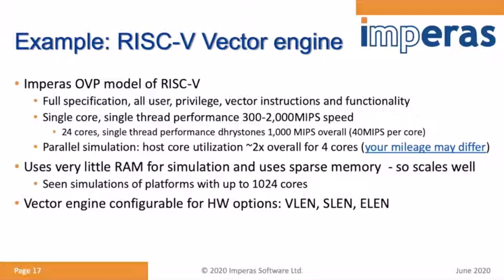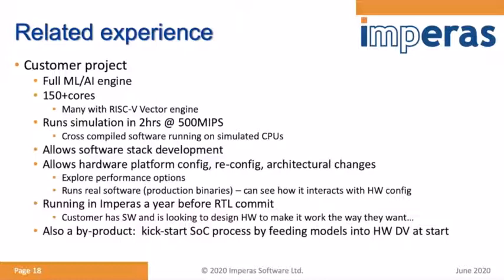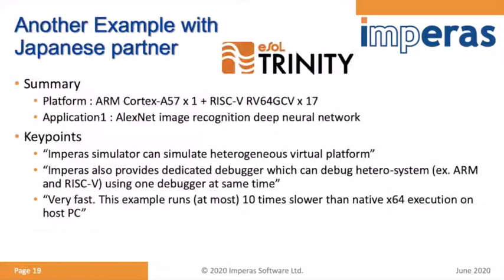Our vectors engine supports the full RISC-V vector specification and performs well, allowing you to model and simulate many-core configurations. We've scaled up to over a thousand cores. One customer project used 150 cores, running their dataset and software in about two hours at 500 MIPS — crucially, one year before the RTL tape-out, giving strong confidence on both architecture and software development.